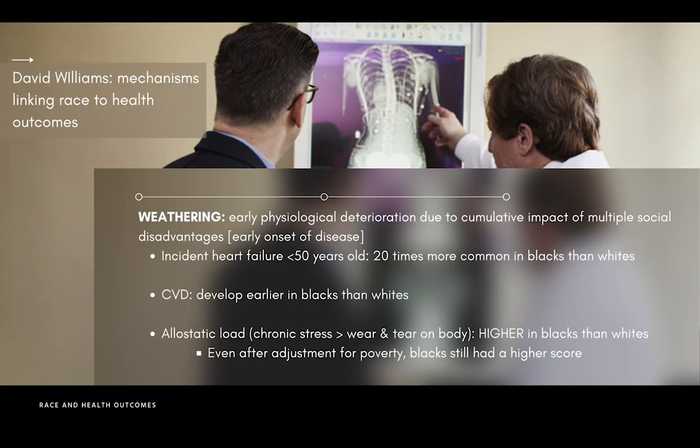Weathering is one of the mechanisms that can possibly explain how race is linked to health outcomes. It's the early onset of disease in one's body, usually due to multiple social disadvantages that one experiences. We see these disadvantages within the Black community due to America's long-standing history of white supremacy and prejudice. Hence, chronic stress is heightened in Blacks than Whites, leading to wear and tear on the body, resulting in diseases like heart failure and CVD, which are prevalent in Blacks.